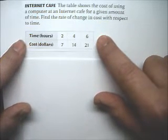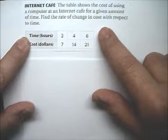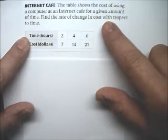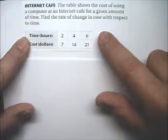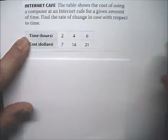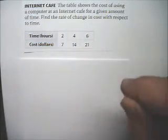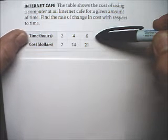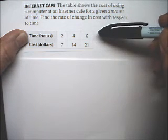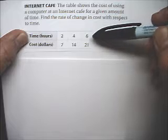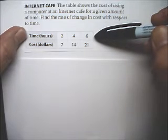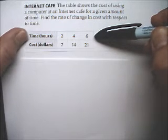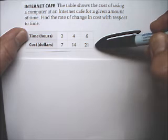The only thing tricky about figuring out the rate of change is knowing which value is the x value and which value is the y value. The book put it in a table for us, and that makes it clear because the top row of the table is x and the bottom row of the table is y.